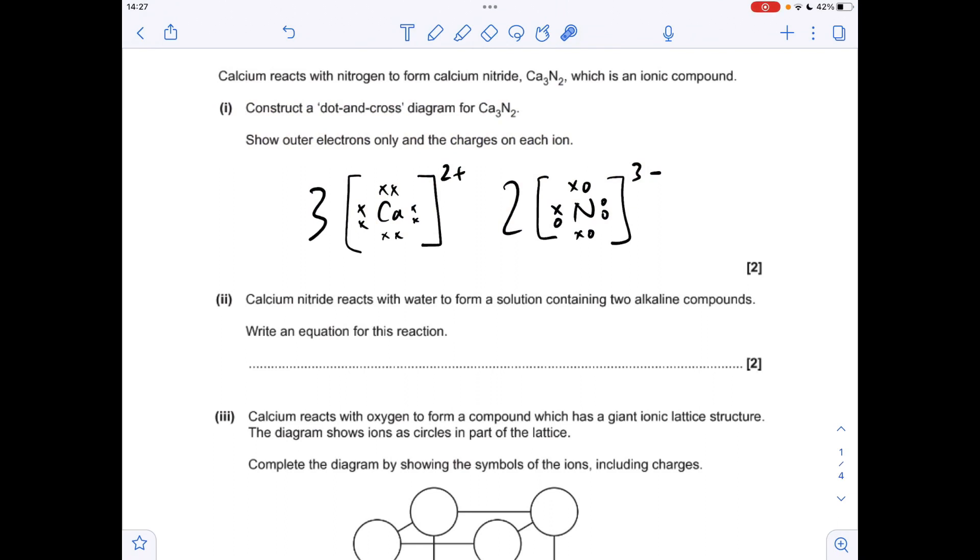So the dot and cross diagram for calcium nitride. We're going to need three calcium two plus ions. I've gone for a full shell of eight electrons in the outer shell there. You can have an empty shell if you want. And I've gone for crosses for calcium, which means for the nitride ion, we're going to need two of those, three minus charge. So I've gone for open circles for the electrons for the nitrogen. So there's five of those in the outer shell, and there's the three donated electrons for each of the nitride ions.